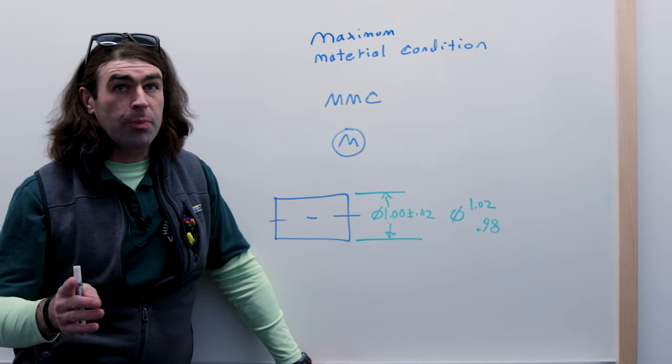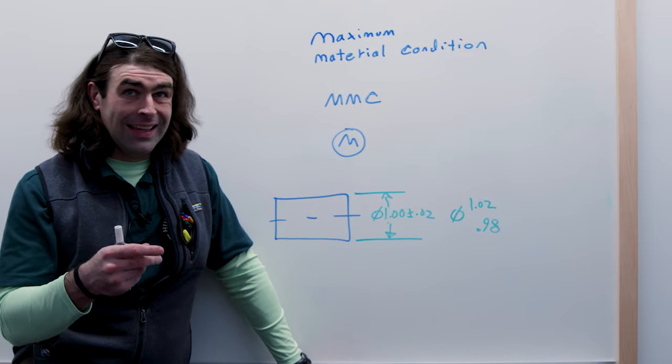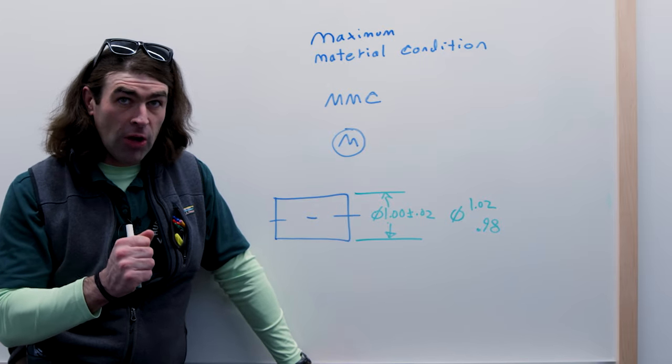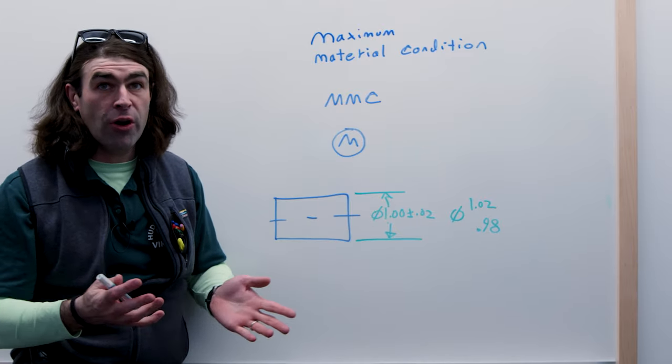I won't show it on the board, but when we're doing a hole, like an internal feature, it flips. The MMC is the smallest size allowed, unlike here where it's going to be the largest size.